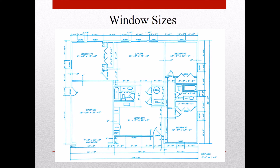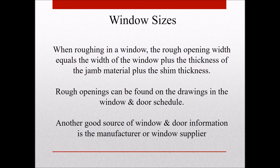When roughing in a window, the rough opening equals the width of the window plus the thickness of the jamb material plus the shim thickness. Rough openings can be found on the drawings in the window and door schedule. For standard vinyl windows, you can generally add one inch to the window size for the rough opening. For fancier windows, check with your window supplier.